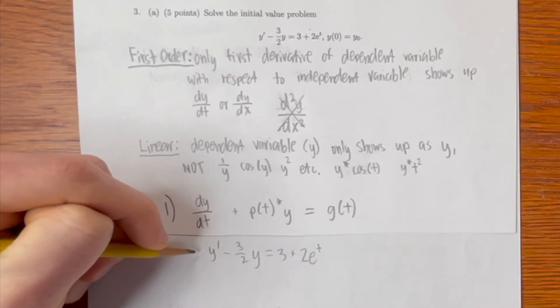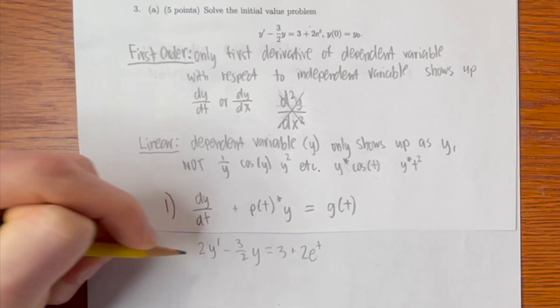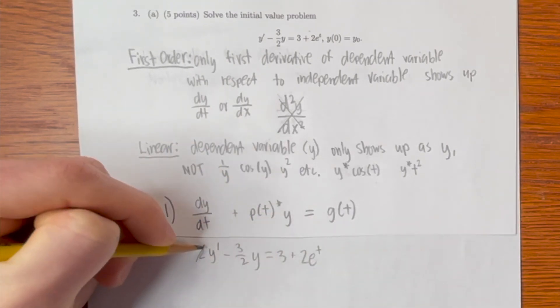Keep in mind, if there is a constant in front of this y', then we would have to divide the entire equation by the constant to get rid of it.